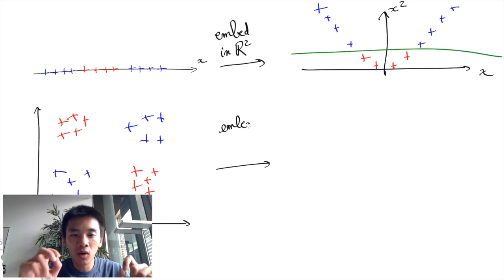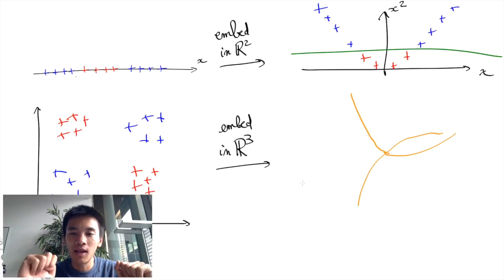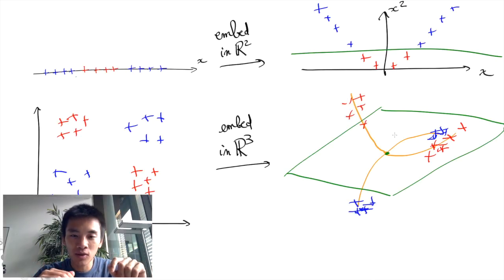Similarly, for the XOR example, a clever embedding in a higher dimensional space using, for instance, a saddle point with main axes along the diagonals will render data points linearly separable.